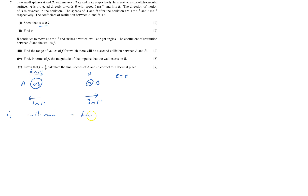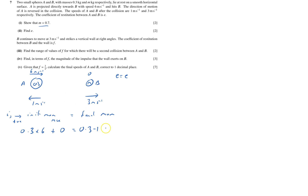Taking right as positive, I set up the momentum equation: mass times velocity for each object. Initial momentum: 0.3 times 6 plus 0 (B is at rest). Final momentum: 0.3 times negative 1 (A reversed) plus M times 3.